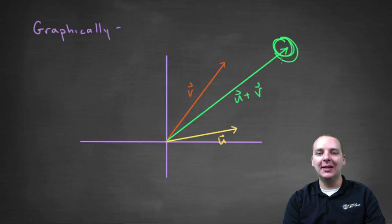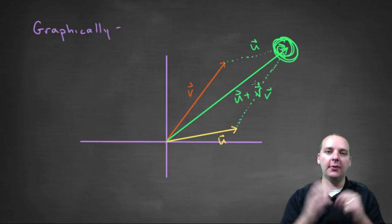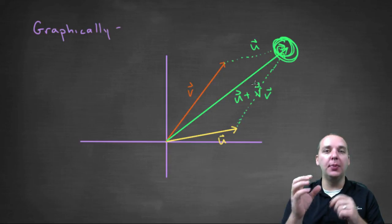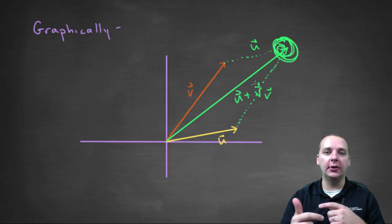But this is where u plus v is. And so like I said earlier, it's got a really nice graphical interpretation to it, thinking of it as one vector picking up where the other vector left off.